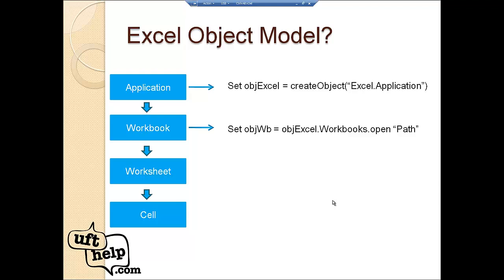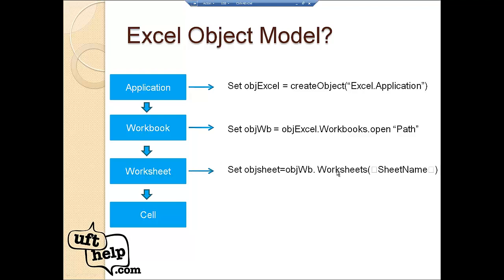After the Excel application object is ready, we want to work with a particular workbook. We use the Excel object to access the Workbooks object and call the Open method, passing the file path as a parameter. Now we've gone from Application to Workbook. Next, to reach a particular sheet, we use the workbook object to target a specific worksheet by giving the sheet name, like Sheet1 or Sheet2.